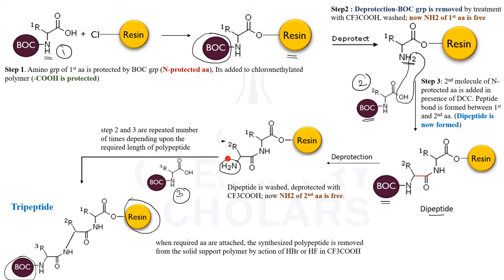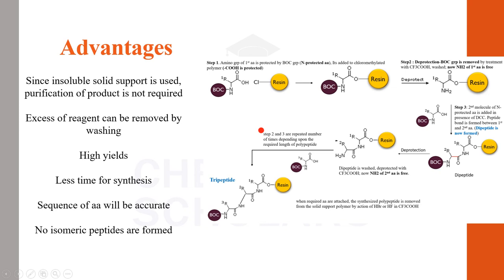This whole synthesis is called Merrifield solid phase peptide synthesis. It is called solid phase because the molecule is supported on a solid phase, and we slowly add one amino acid at a time, increasing the peptide chain length. This reaction is advantageous because you are using a solid support, so purification is not required. You can control the sequence of amino acids, no extra products are formed, and excess reagents can simply be removed by washing. High yields are obtained and synthesis time is very less.